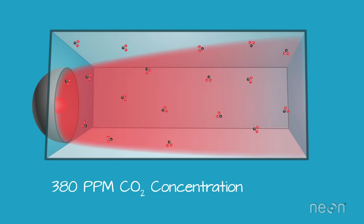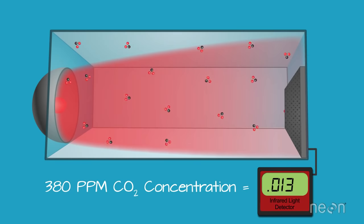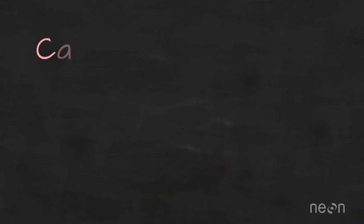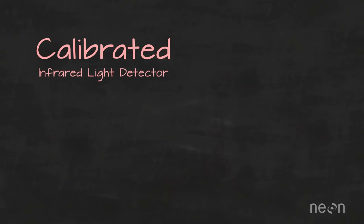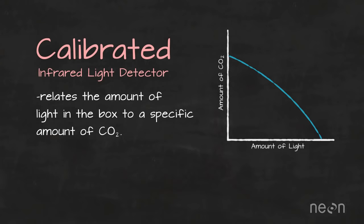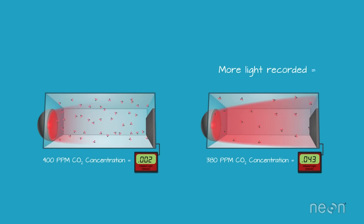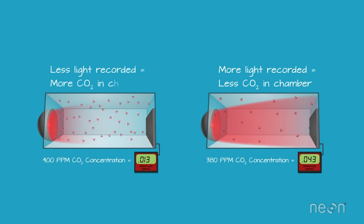On the other hand, if the chamber doesn't have a lot of CO2 in it, only a small amount of that light gets absorbed. Now equip the chamber with a detector that can measure the amount of light that makes it to that end of the chamber. So more light recorded means less CO2 in the chamber, and less light recorded means more CO2 in the chamber.